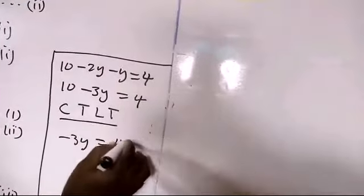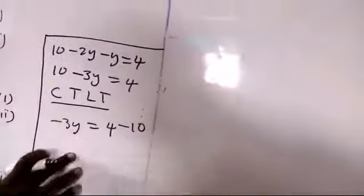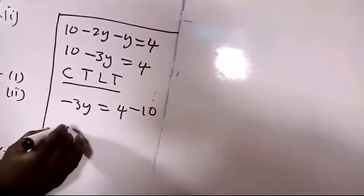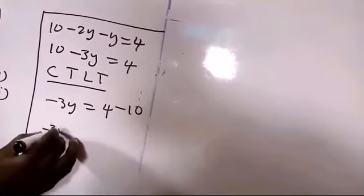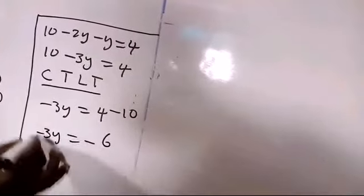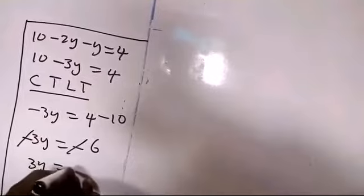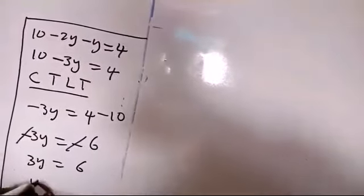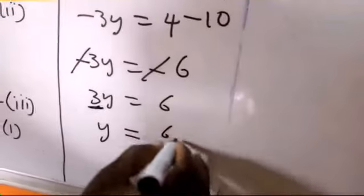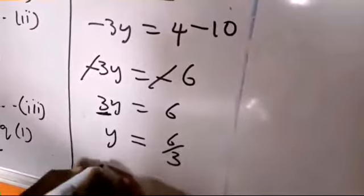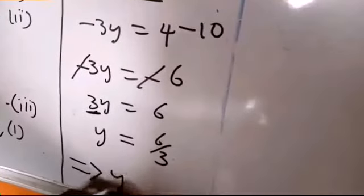So, here, I'm going to have -3y equals to -6. So, this minus is going to cancel out this one. 3y = 6. Now, dividing both sides by the coefficient of y, y is going to be 6 divided by 3, which implies that y is equal to 2.